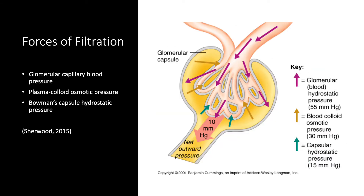Now let's move on to the forces of filtration. In order for fluid to push through the filtration layers of the glomerulus membrane, some type of force is required. There are three physical forces that drive the process of glomerular filtration: one of which favors filtration and two that oppose it. The forces involved are glomerular capillary blood pressure, plasma colloidal osmotic pressure, and Bowman's capsule hydrostatic pressure.